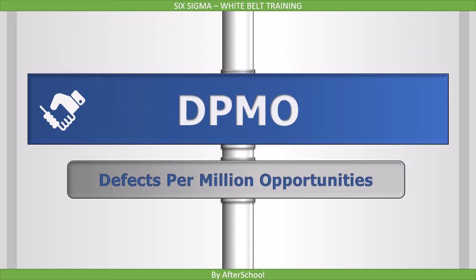The next point is DPMO, which is defects per million opportunities. If there is a target of 3.4 defects per million opportunities when implementing Six Sigma, the Six Sigma process would have 3.4 defects in 1 million opportunities, thus also known as DPMO. That's another philosophy of Six Sigma.